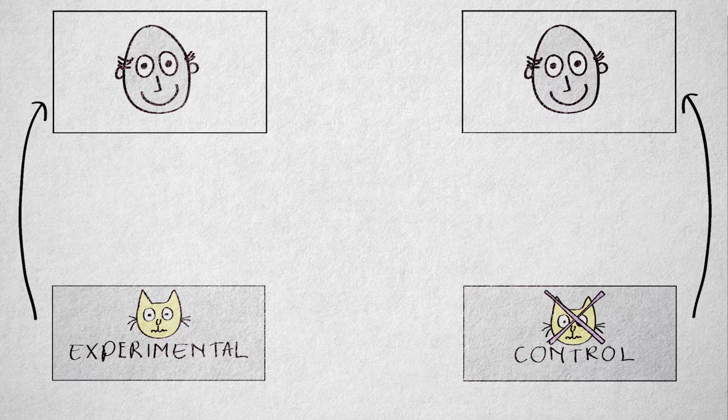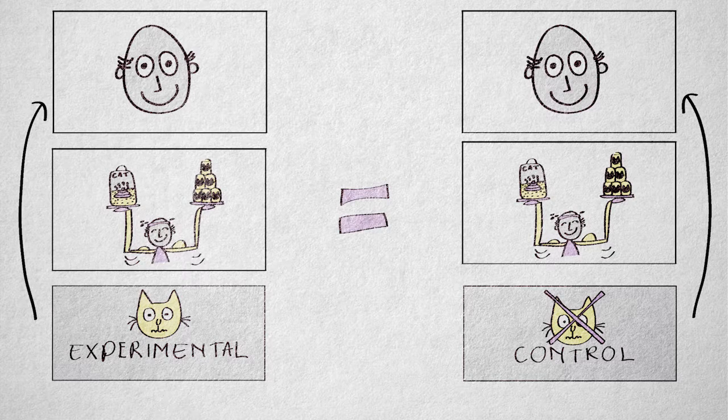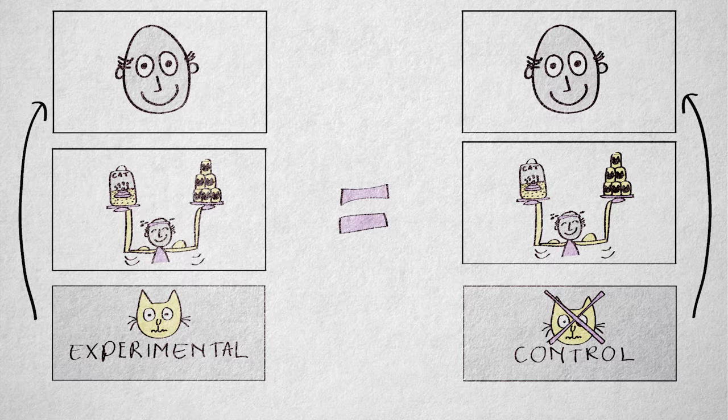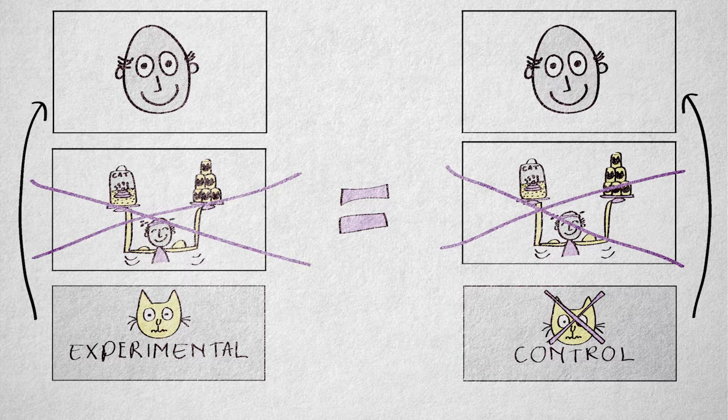For example, if all elderly people in both groups are required to be equally active, then physical activity cannot explain differences in depression.